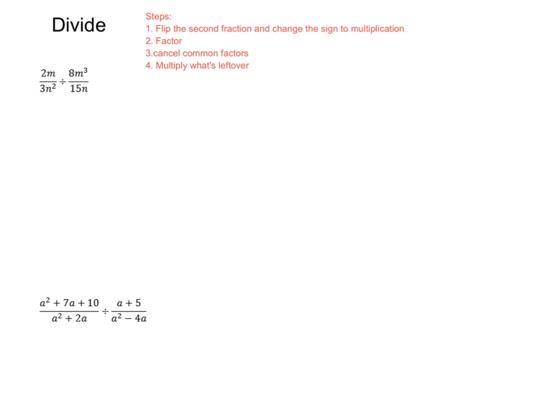So let's start and take a look at this first one over here. 2m over 3n squared divided by 8m cubed divided by 15n. So I'm just going to go ahead and rewrite this and flip the second one over. What we're going to have is 2m over 3n squared. First one stays the same, change the sign to multiplication, and then we're going to flip this. So 15n goes on top, and 8m cubed goes on the bottom.